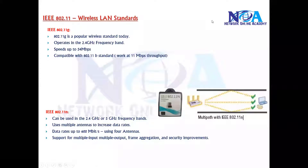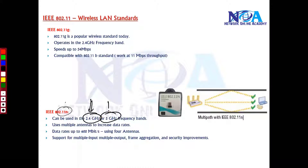Next we'll try to understand the 802.11n standard. This is one of the next standards introduced, and it supports both 2.4 GHz and 5 GHz frequency ranges, meaning you may find devices operating on either of these frequency bands.